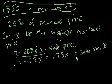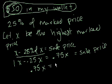Well, what's the sale price that I can afford? The sale price I can afford is $50. So 0.75x is going to equal $50.